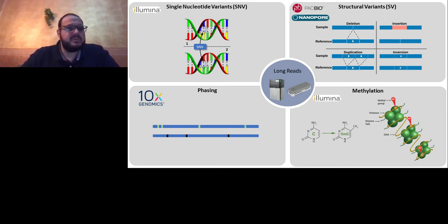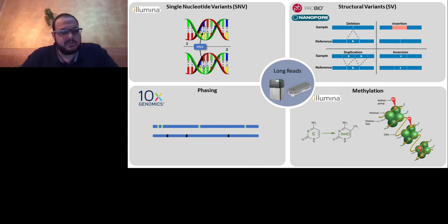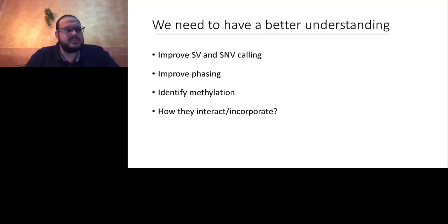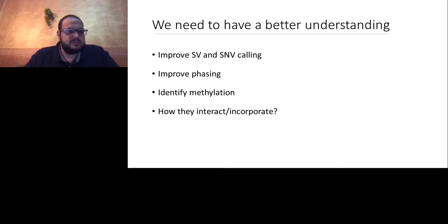We could avoid these biases by using only long reads — either Oxford Nanopore or PacBio — which still provides the same information. The most important point is to achieve better understanding by improving identification of structural variants and SNVs, improving phasing, identifying methylation, and understanding how they interact together. For this purpose, I was inspired to develop PRINCESS.